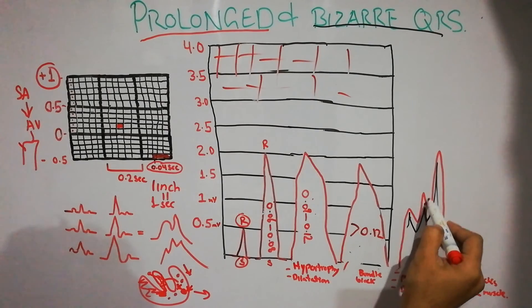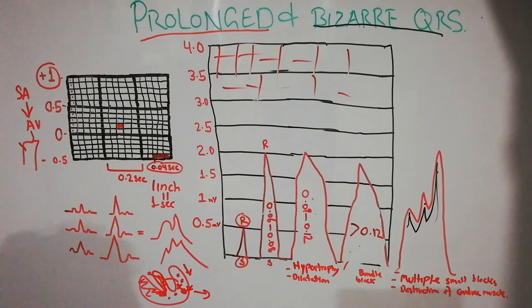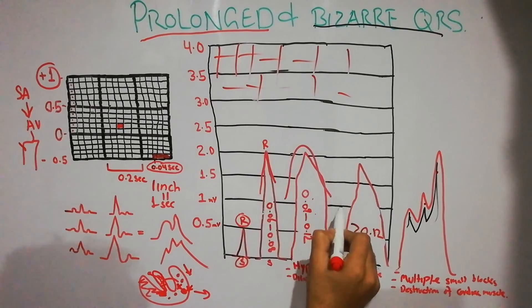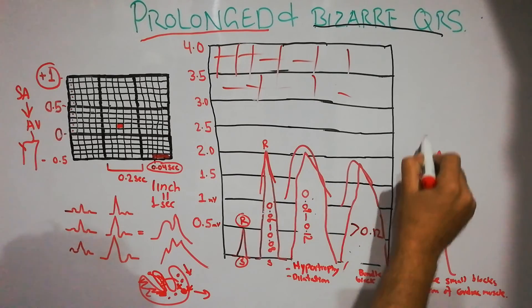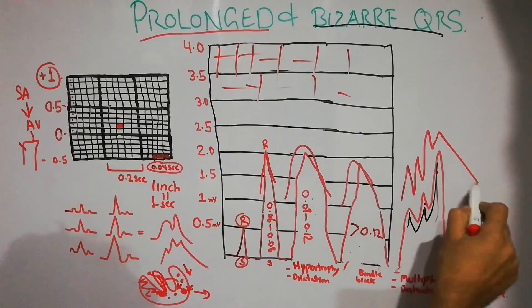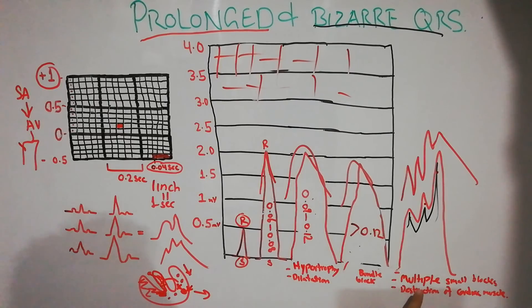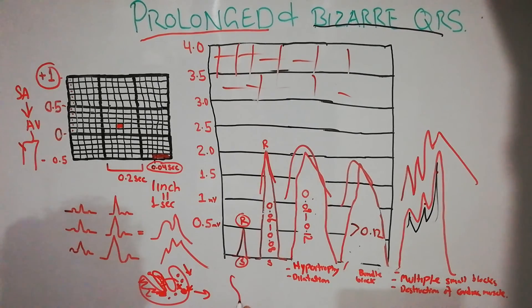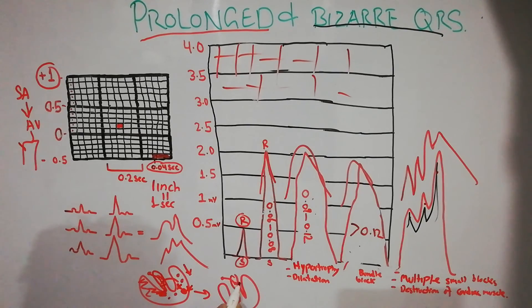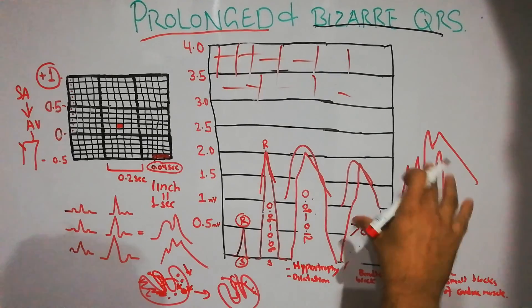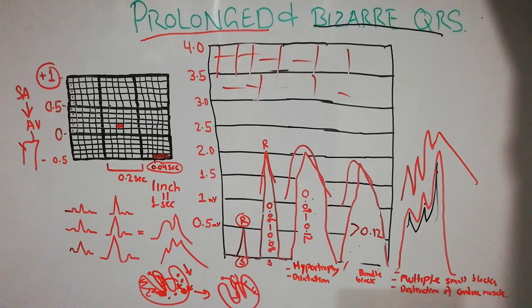In cases of multiple small blocks and destruction of cardiac muscle, the QRS complex may have two, three, or more peaks instead of the normal single peak. The width or duration of the QRS complex will also be prolonged. This bizarre appearance occurs because the depolarization current, which normally flows smoothly from SA node to AV node through the bundle branches, has been disturbed and blocked in multiple areas. That concludes our discussion of the prolonged and bizarre QRS complex.